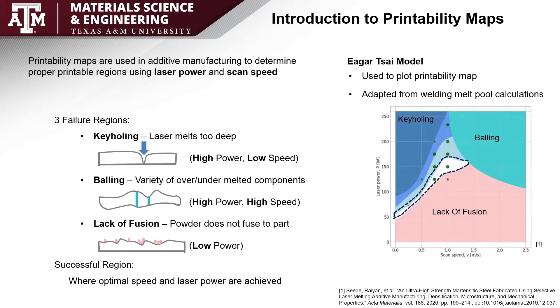One popular method to visualize printability is by using a printability map. These have scan speed on the x-axis of the plot and laser power on the y. To understand how these are created, they use something called the Eagar test model used primarily to plot the printability map, and it's important to know that it was adapted from welding using melt pool calculations.